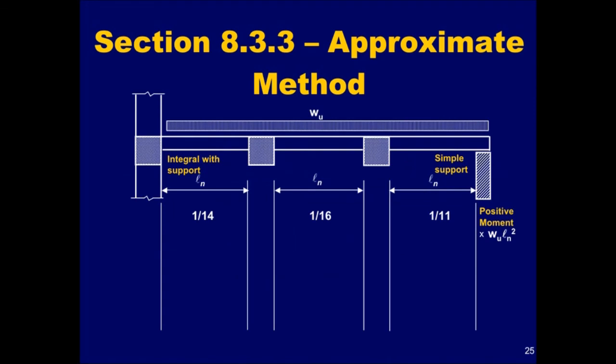The coefficients for determining the positive moments along the span are illustrated here. These coefficients are multiplied by the total factored uniformly distributed load, W sub U, and the square of the clear span, L sub N squared.